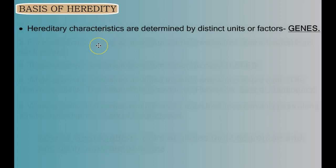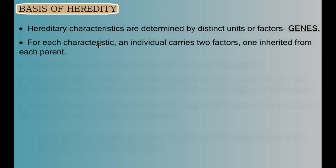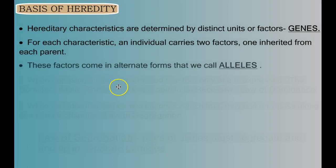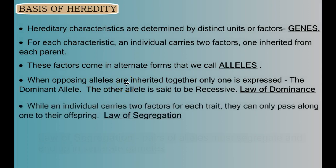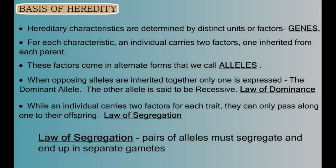These results led Mendel to make a few inferences: one, traits or characteristics are being controlled by distinct factors — we'll call them genes; two, for each trait a person carries two of these factors, one inherited from each parent; three, these factors come in alternate forms that we'll call alleles; four, when opposing alleles are inherited together, only one is expressed — the dominant allele — and the other is said to be recessive, which we call the law of dominance; and five, while an individual carries two factors for each trait, they can only pass one along to their offspring — we call this the law of segregation.